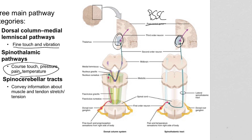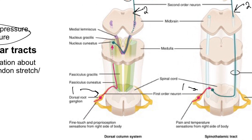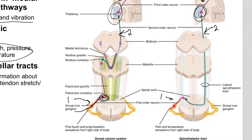The first order neuron in each pathway is shown in red, the second order neuron in green, and the third order neuron in purple. You always start with neuron number one to get into the spinal cord, neuron number two takes you up the spinal cord to the brain, and then neuron number three connects the thalamus to the somatosensory cortex. Since it's a sensory pathway, you always go in the dorsal root and head toward the dorsal horn. In the DCML, the first order neuron shoots up the spinal cord and has its synapse in the medulla at the base of the brain.